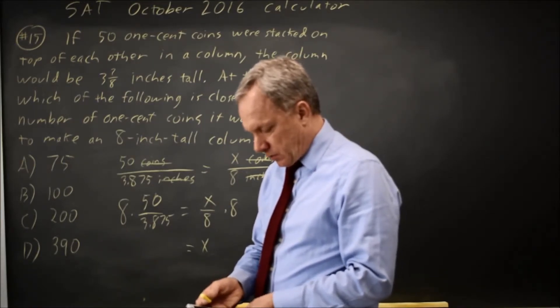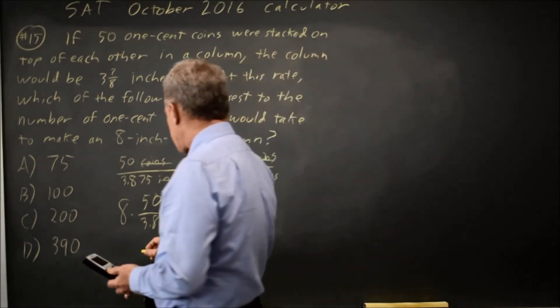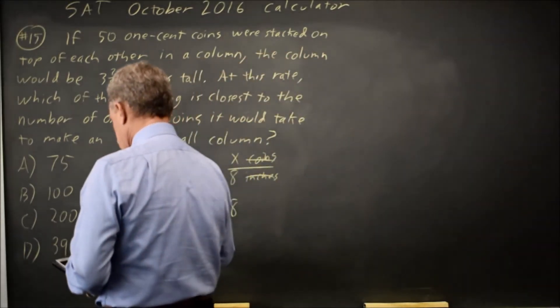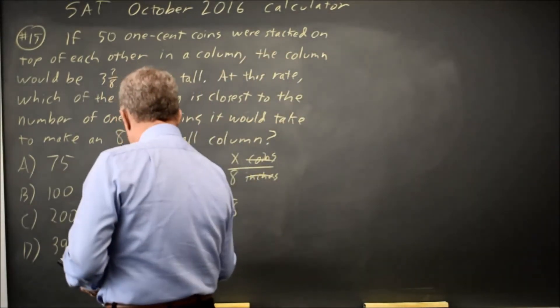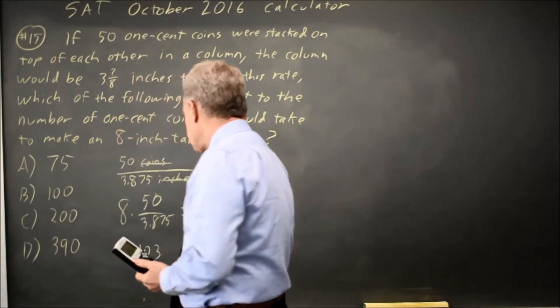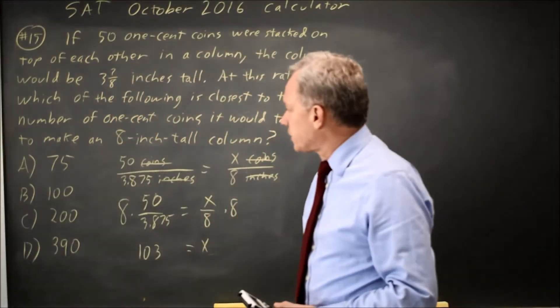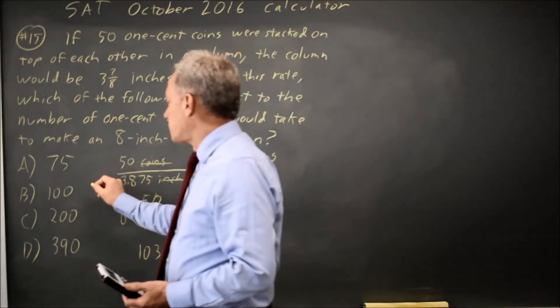8 times 50 over 3.875 gives me 103 point something. And that is closest to 100.